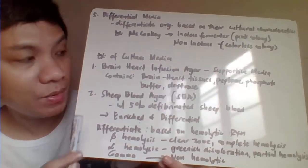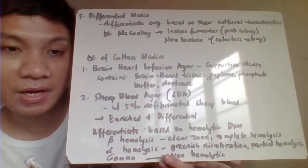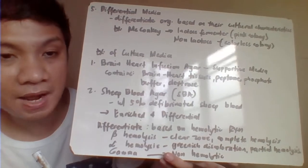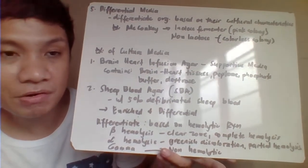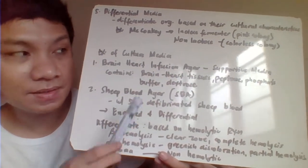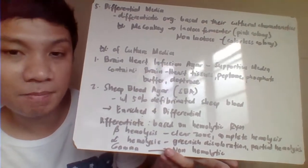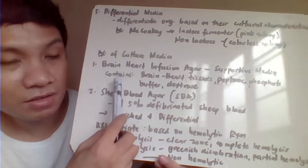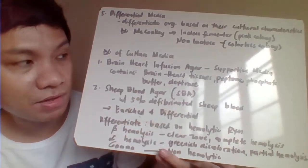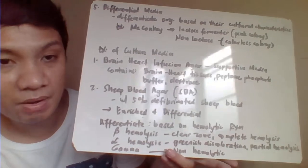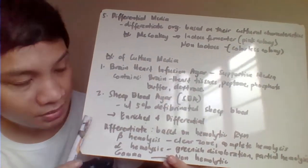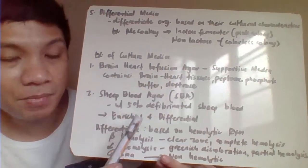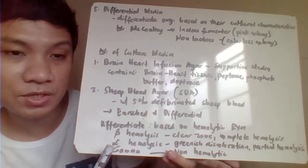Specific culture media: Brain Heart Infusion (BHI) agar is a supportive media used in blood culture, containing brain and heart tissue, peptone, phosphate buffer, and dextrose. Sheep Blood Agar (SBA) contains 5% defibrinated sheep blood, making it both enriched and differential.